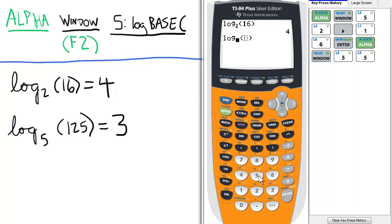And then we will enter 5 for the base of our log. Scroll over once to the parentheses, we will put in 125, and press enter. And log base 5, 125 is 3.